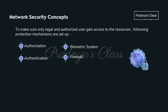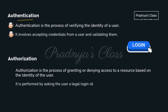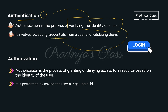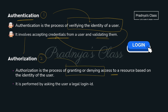We are sharing data over the network, so it's our responsibility to protect it. Here are some protection mechanisms: Authorization, Authentication, Biometric System, and Firewall. Authentication is verifying the identity of the user by accessing credentials and validating them. Authorization is the process of granting or denying access to the user based on their identity.